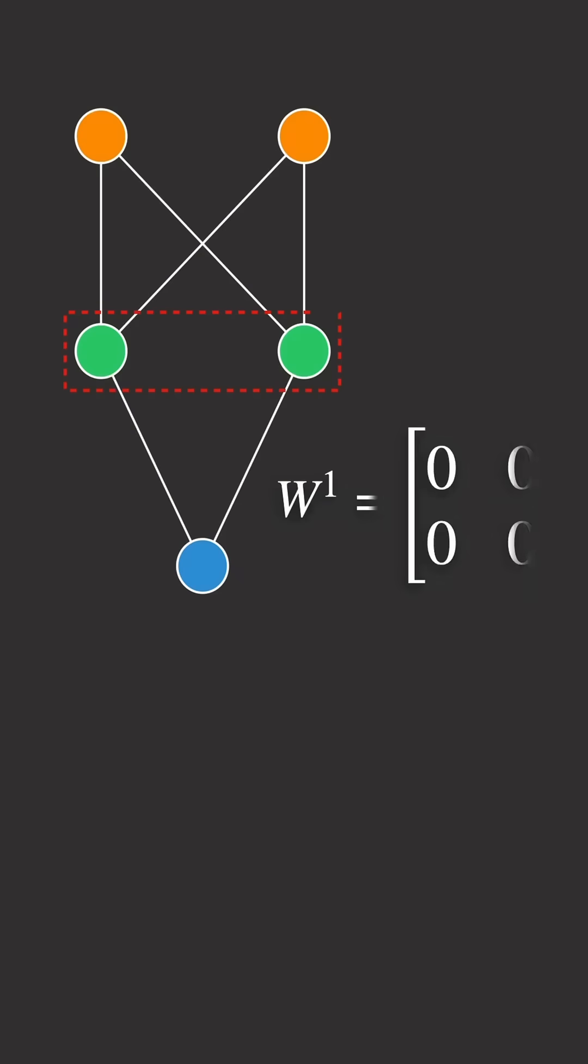If w1, a 2x2 matrix, is initialized to all zeros, both hidden units compute identical functions.